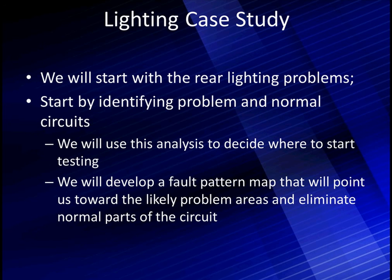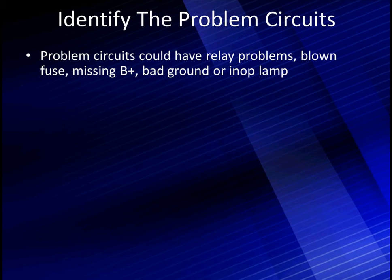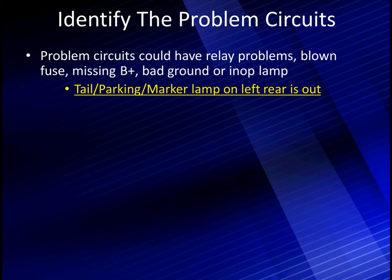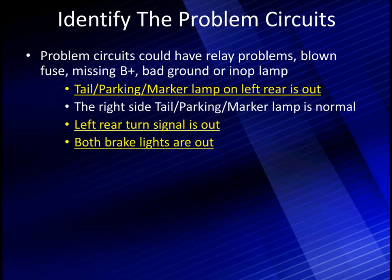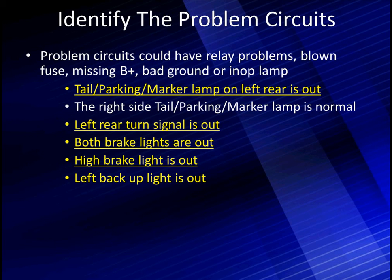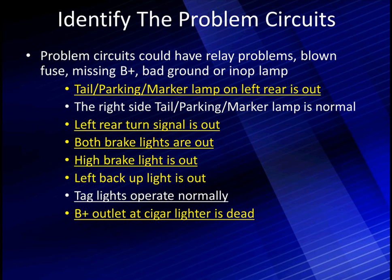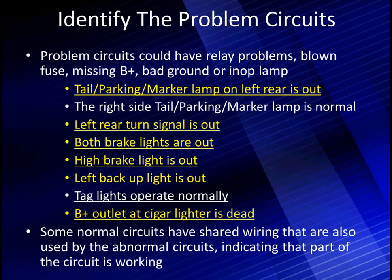Let's define what we mean by 'eliminate.' We eliminate normal parts of the circuit — parts we don't have to test. That's what productivity is. They are working normally and we have proof because of the observations we're going to make. The problem circuits could have relay problems, blown fuses, missing B-plus, bad ground, or an inoperative lamp — whatever the case may be. The tail light, parking light, and marker light — all rolled into one — on the left rear is out and not operating. The right side tail, parking, and marker lamp is normal. The left turn signal is out. Both brake lights are out. The high brake light is out. The left backup light is out. The tag lights operate normally. The B-plus outlet to the cigarette lighter is dead. So we're looking at a whole bunch of problems — where do you start?